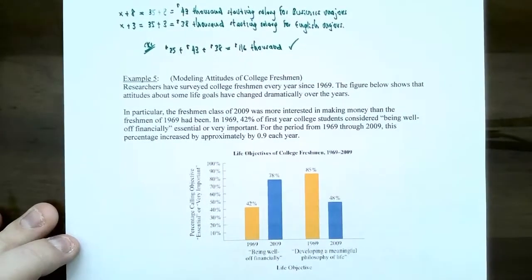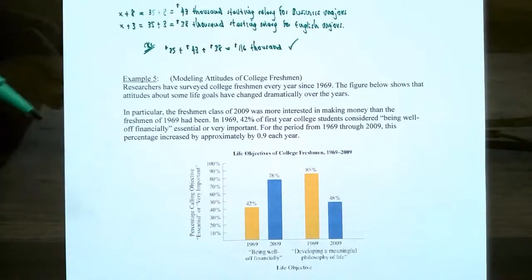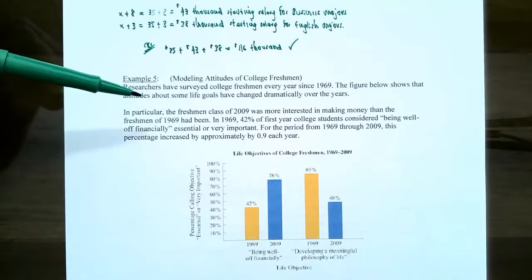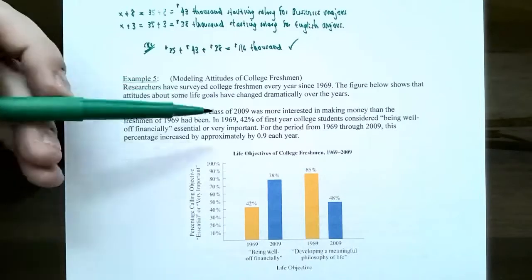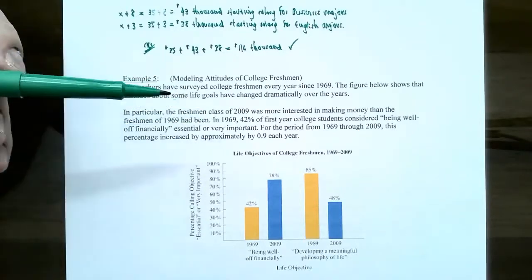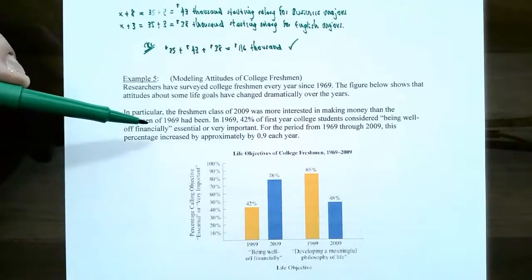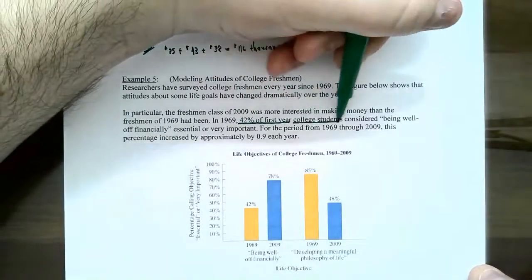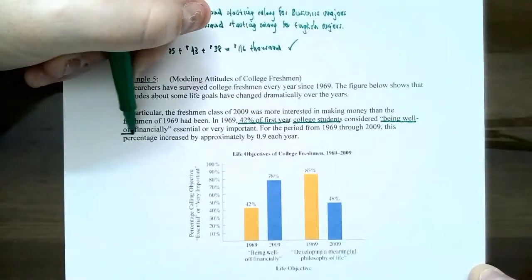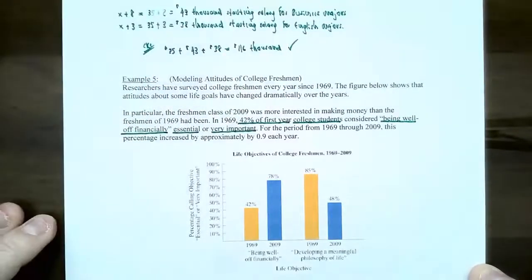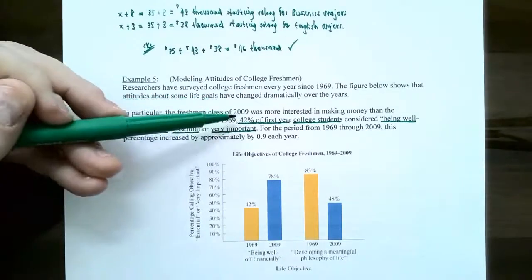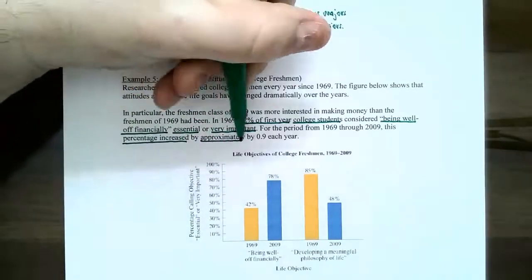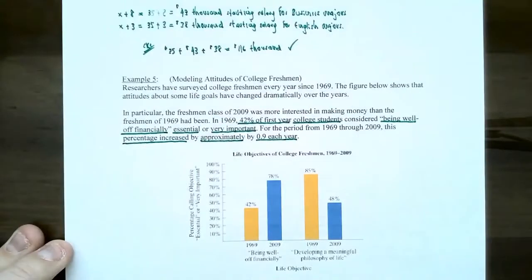Let's look at example five next — it works very similarly. Researchers have surveyed college freshmen every year since 1969. The figure below shows that attitudes about some life goals have changed dramatically. In particular, the freshman class in 2009 was more interested in making money than freshmen in 1969. In 1969, 42% of first-year college students considered being well-off financially essential or very important, and this percentage increased approximately 0.9% every year since then between 1969 and 2009.